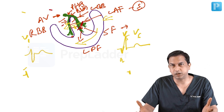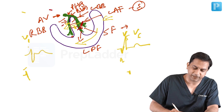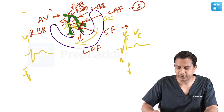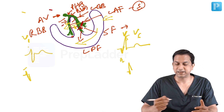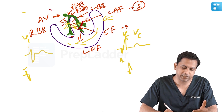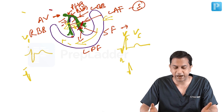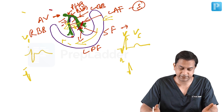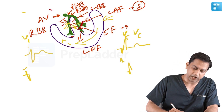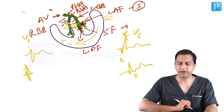Thereafter, there will be depolarization throughout the LV, so you will have an S wave in V1 and R wave in V5 and V6. Since after LV depolarization is complete, the wave front will be shifting towards the right side, and the terminal deflection will be towards the right side. That is why there will be another R wave in lead V1 and a slurred S wave in V5, V6.